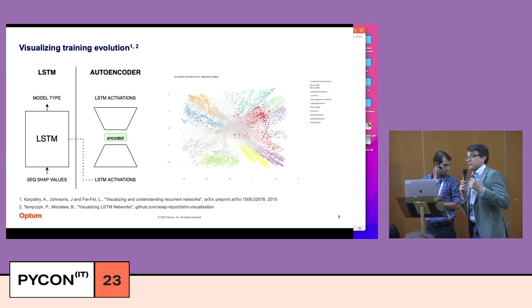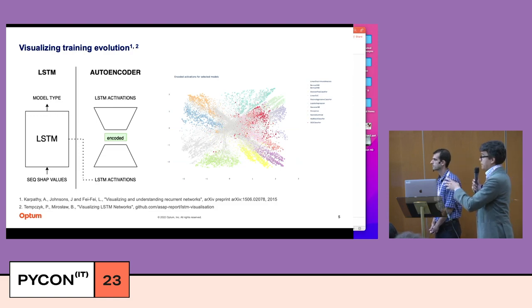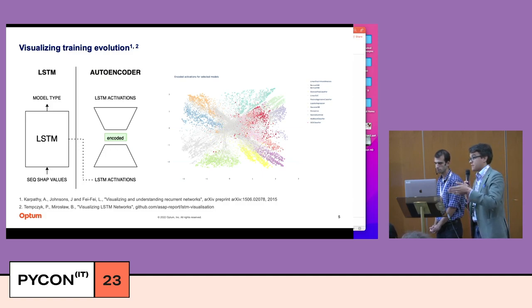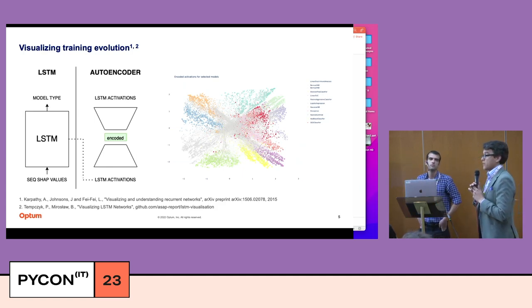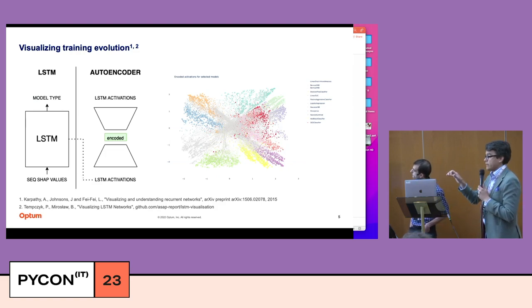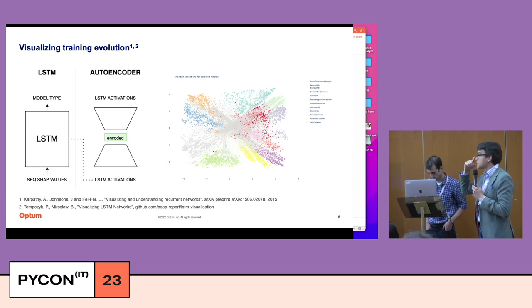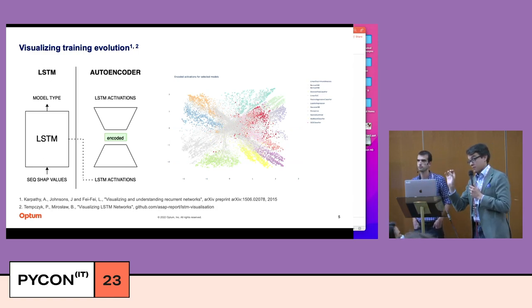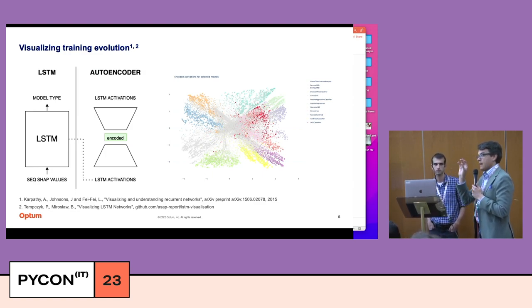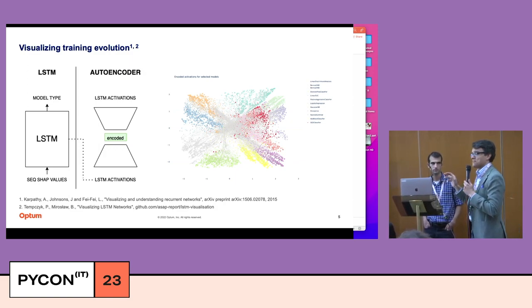Another thing we did was represent model training over time and across the data set. We took the SHAP activation values calculated for each inference at different training checkpoints — at 5%, 10%, 15% of training and so on. We trained an LSTM to use those activations to classify which model was used, then took the hidden layer of that LSTM and trained an autoencoder on it to get a low-dimensional representation. We mapped those activations across what I call the conformational space of training, plotting on a two-dimensional plane what model training looks like.